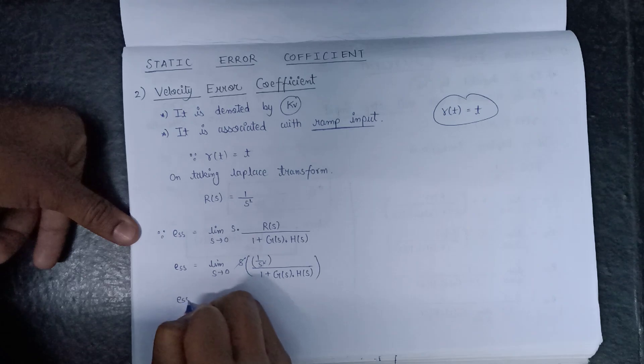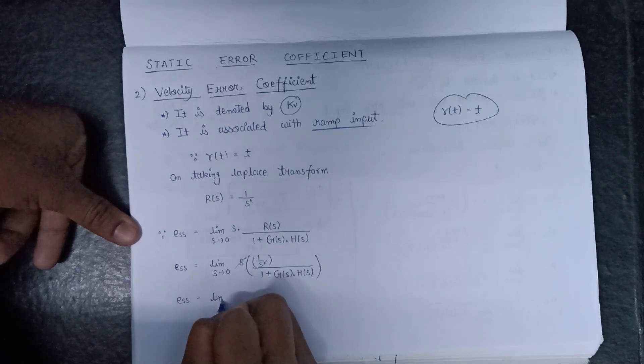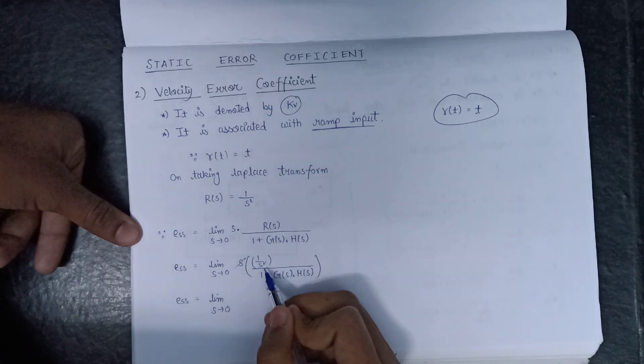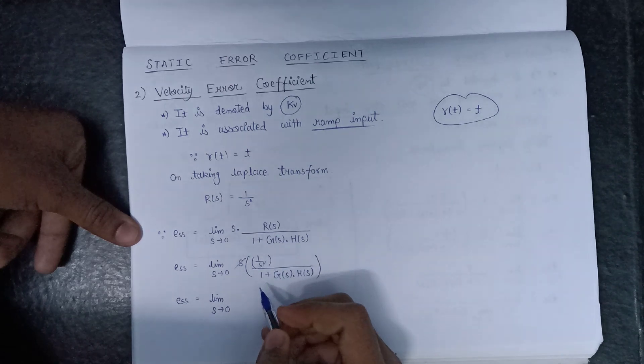E(s) can also be written as limit s tends to 0, this 1 over s can be written inside the denominator form also.